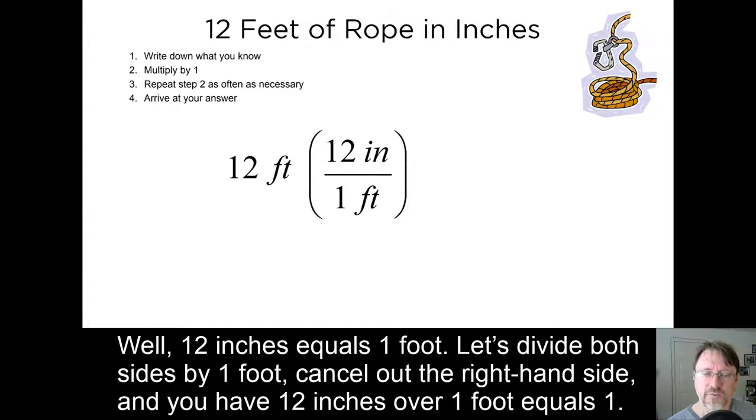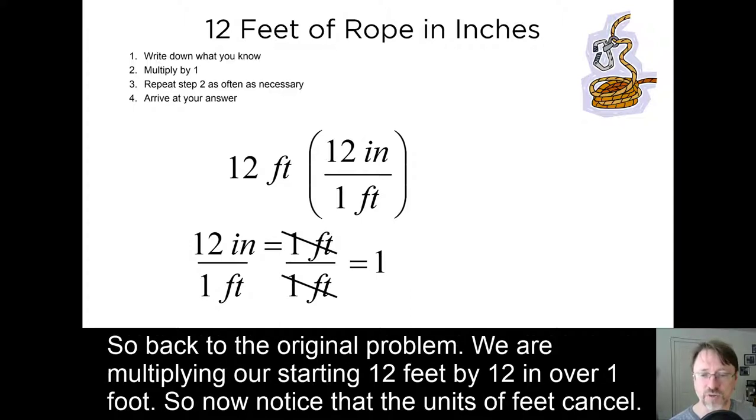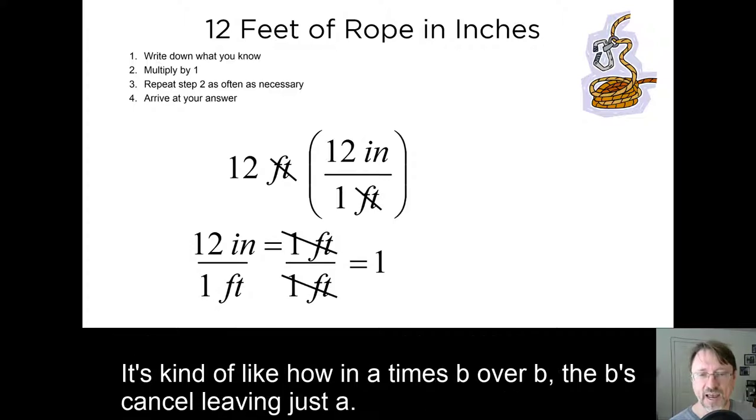Well, twelve inches equals one foot. Let's divide both sides by one foot. Cancel out the right-hand side, and you have twelve inches over one foot equals one. So, back to our original problem. We are multiplying our starting twelve feet by twelve inches over one foot. So, now notice that the units of feet cancel. It's kind of like how in A times B over B, the Bs cancel, leaving just A.